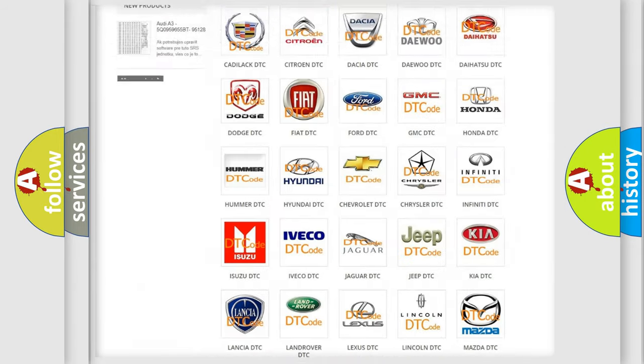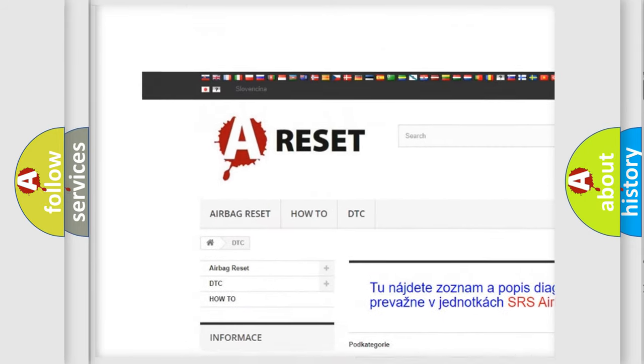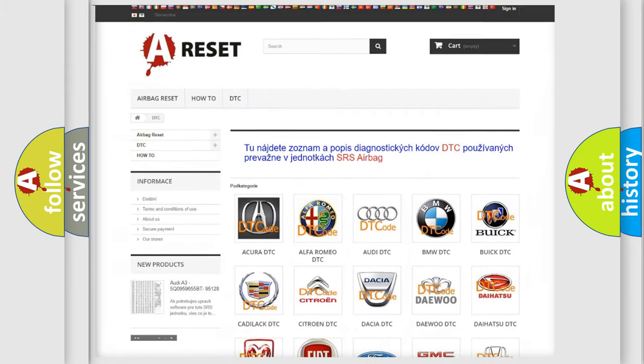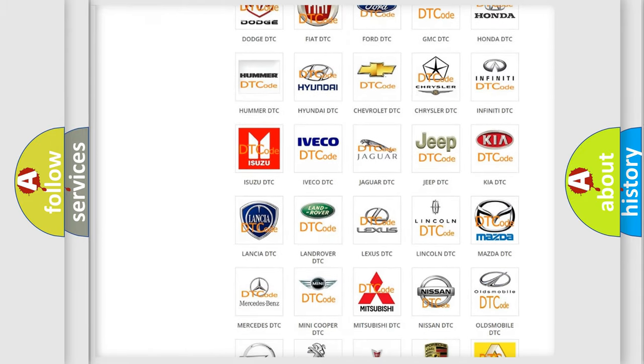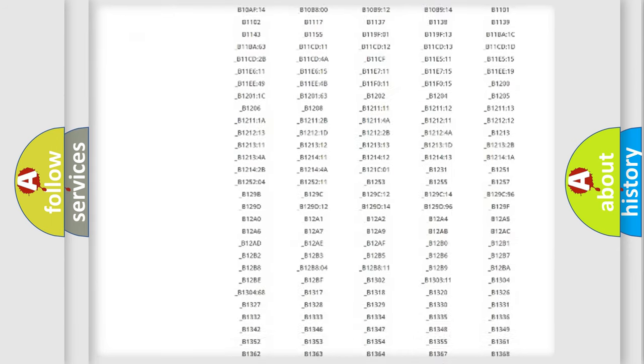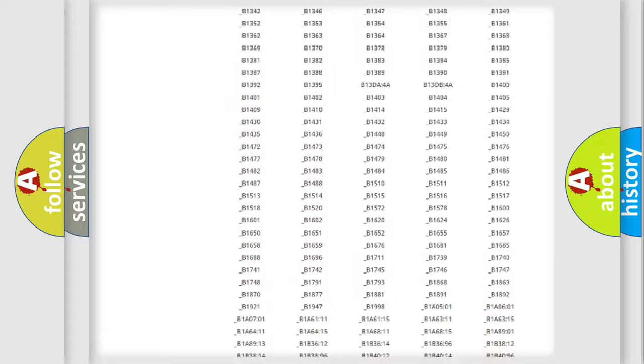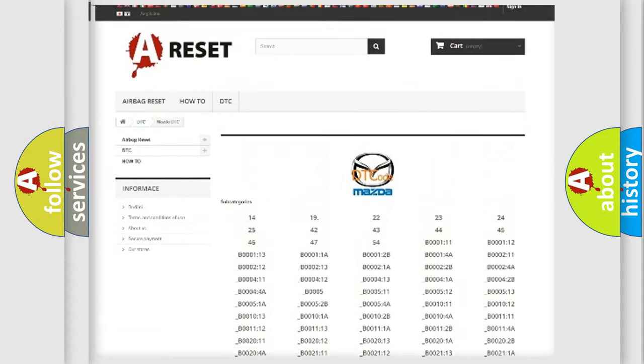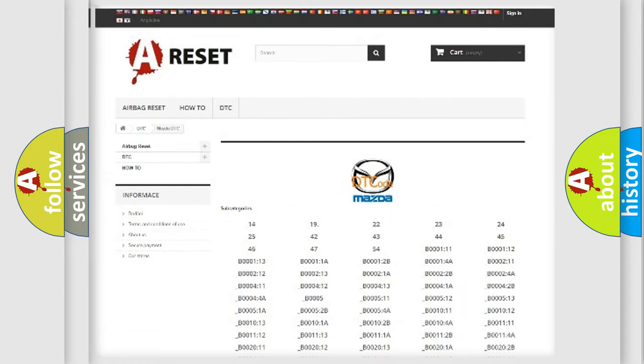Our website airbagreset.sk produces useful videos for you. You do not have to go through the OBD2 protocol anymore to know how to troubleshoot any car breakdown. You will find all the diagnostic codes that can be diagnosed in Mazda vehicles, and also many other useful things.